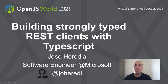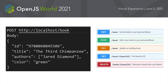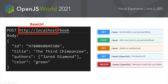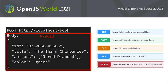Before jumping into the code, let's take a look at a sample REST API call. This is a simple call to our imaginary book catalog service that we will be using throughout the talk. The first part is the method, which describes the operation to be executed on a resource. Following is the resource, which is composed of a base URL that remains constant for the service and a path which identifies the resource. Then we have the payload, which is the data sent to the service.